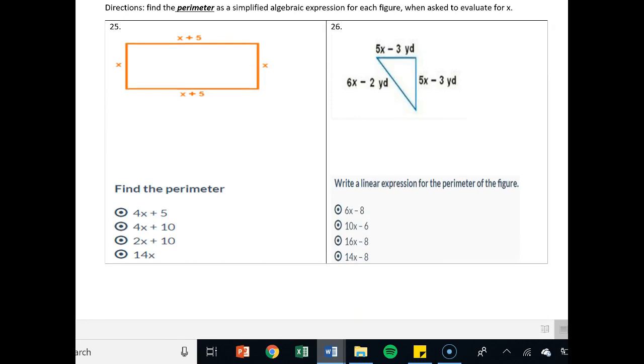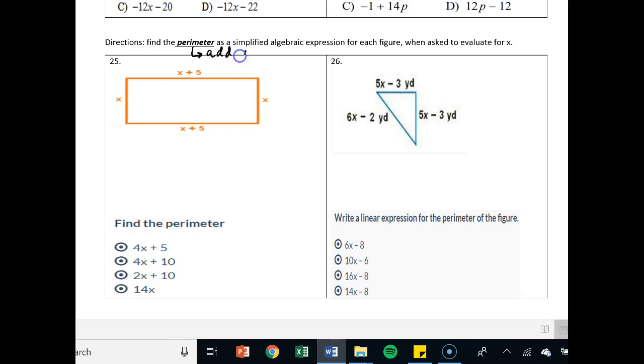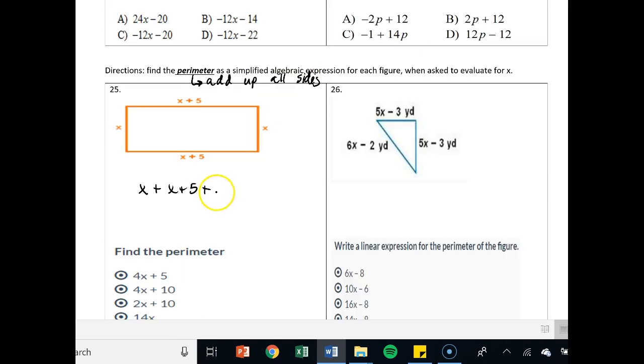Problems 25, 26. It says find the perimeter. Remember perimeter means add up all sides. We want to find the distance around an object. So we're going to have one long addition problem. Make sure you get every side. So x plus x plus 5 plus x and then get to our last side plus x plus 5. Then we go through like terms. x, x, x, and x. That's 4x. 5 and 5. That's plus 10. There's your answer. 4x plus 10.